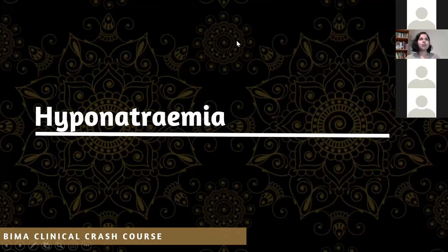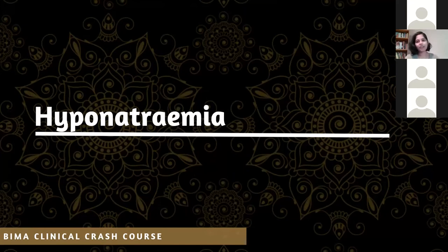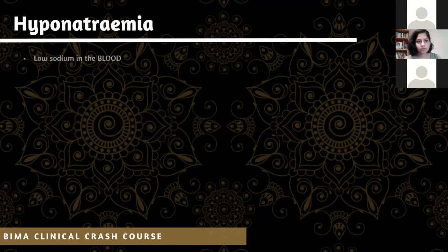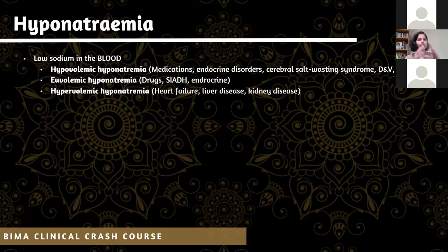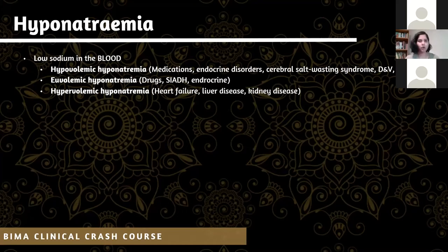A lot of people get confused with electrolyte imbalances. Let's focus on one particular imbalance: hyponatremia, which is low sodium in the blood. You can look at it in three categories. The first is hypovolemic hyponatremia — where we are losing volume completely through our body and end up with low sodium. This commonly happens because of diarrhea and vomiting, sweating, certain endocrine disorders, and medications such as diuretics.